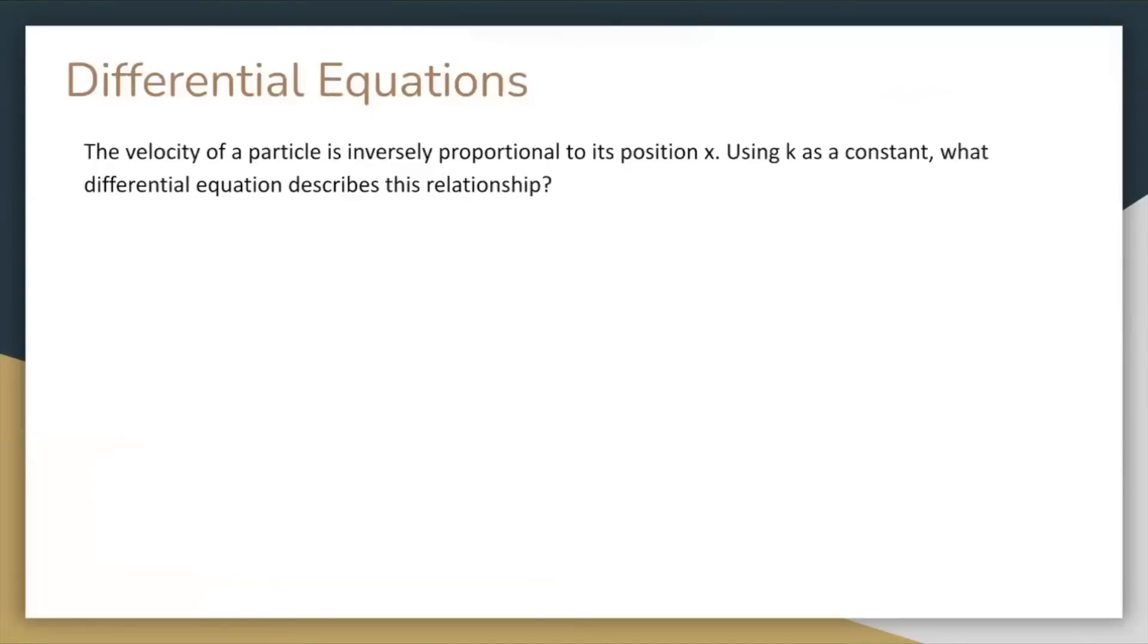So differential equations relate a function and its derivatives. Here is an example. The velocity of a particle is inversely proportional to its position x. Using k as a constant, what differential equation describes this relationship? Well, velocity is the derivative of x with respect to time, and since it's inversely proportional to x, it's equal to k over x.